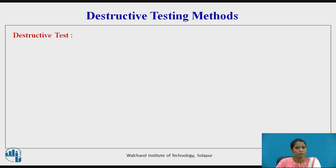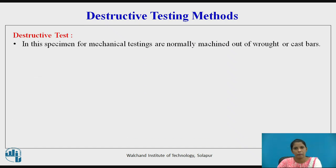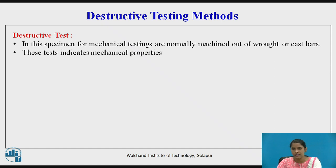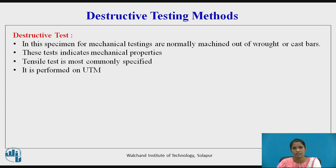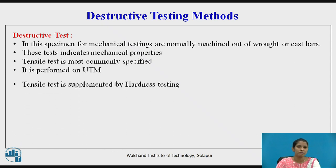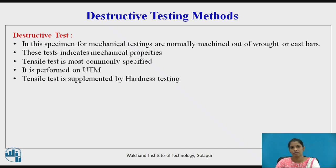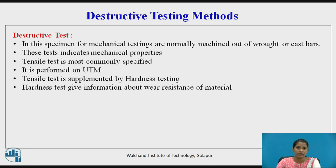In destructive testing, the rod or specimen used is machined or is of cast bars. These tests indicate mechanical properties like tensile strength, ultimate strength, breaking stress, ductility, toughness, and hardness. The tensile test is the most commonly specified test and is performed on a UTM. It is supplemented by the hardness test, which gives information about wear resistance. The three types of hardness tests are Rockwell's, Brinell, and Vickers hardness. Apart from these, Poldy's hardness test is also available.